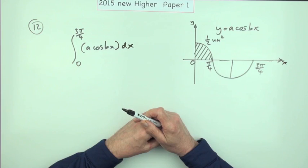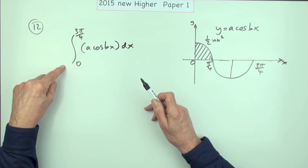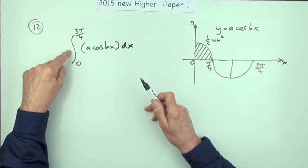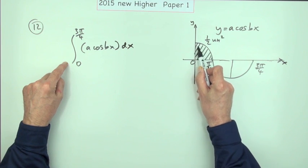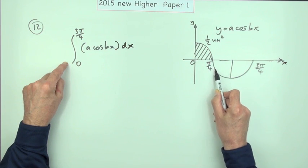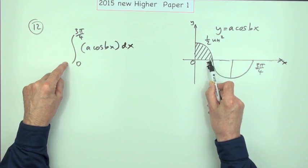But this doesn't ask you for the area. It just asks you for the value of the integral, and the integral simply carries out a piece of arithmetic, adding up if you like all the little rectangles that make up the parts. So these would all be positive amounts, but these would be negative amounts.